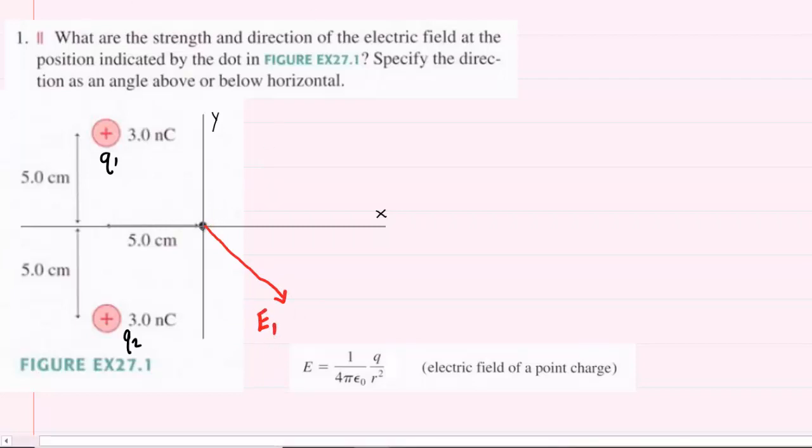Similarly, at the same point, looking at charge Q2, which is also positive, we're going to draw an electric field that points away from Q2. And we can label this electric field E2.